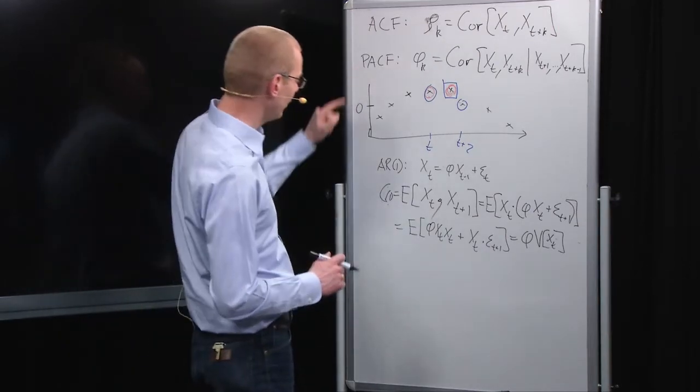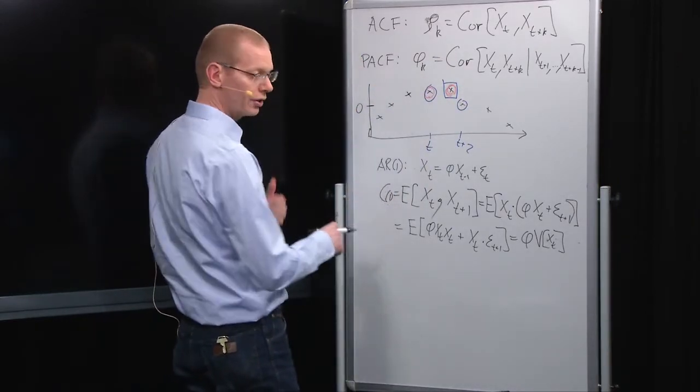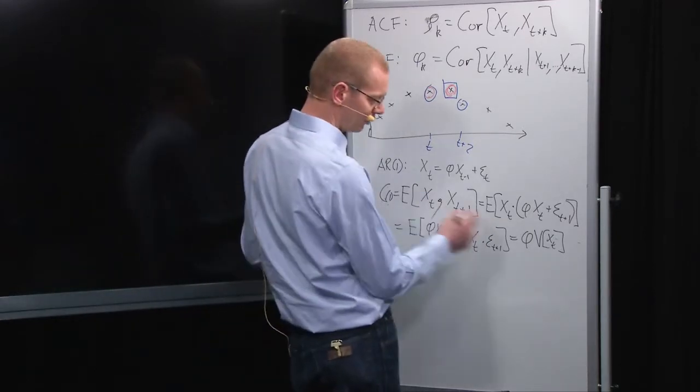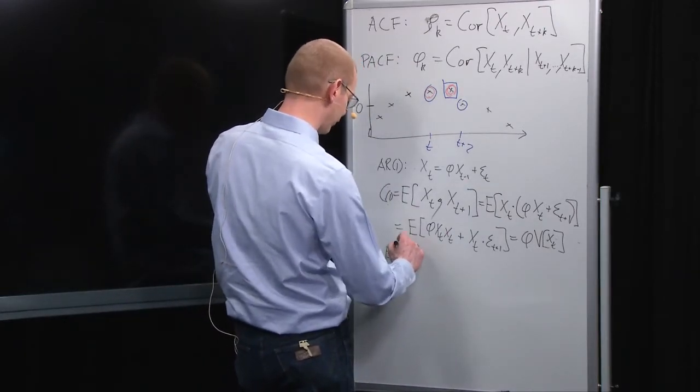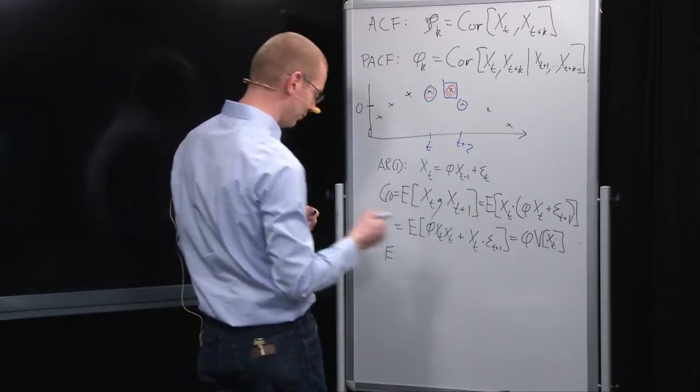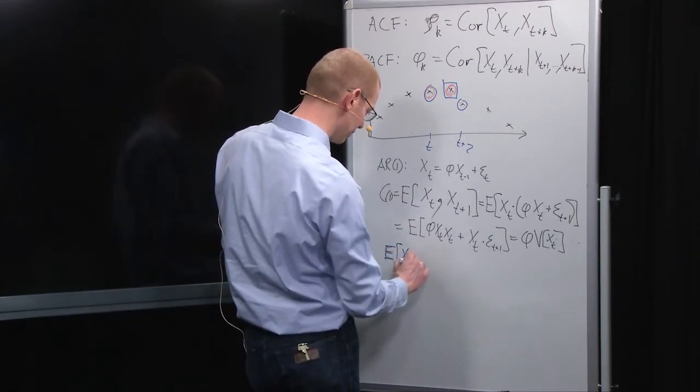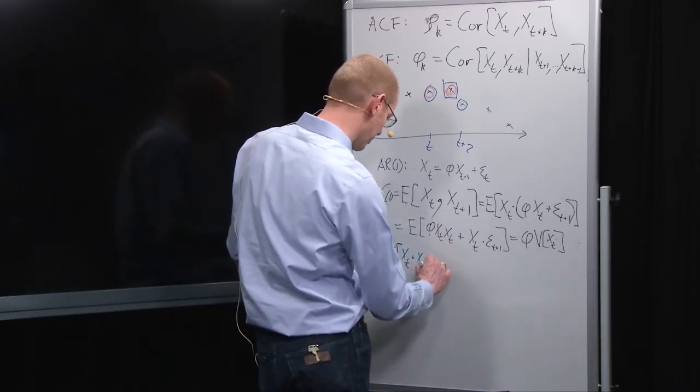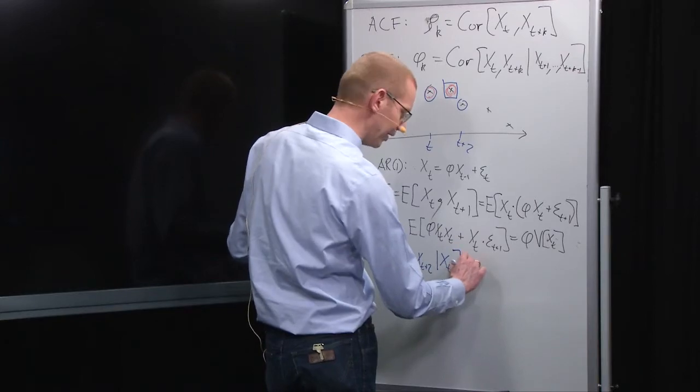Now, if we go for the partial autocorrelation function at lag 2, so rather than lag 1, let's go to lag 2. We know for the AR1 process for the autocorrelation function, lag 2 will give us phi squared. But now let's look at the expectation of, let me do that in blue to resemble what I had up there, the expectation of x t multiplied by x t plus 2, given that I know what x t plus 1 is. That's what I'm looking at.